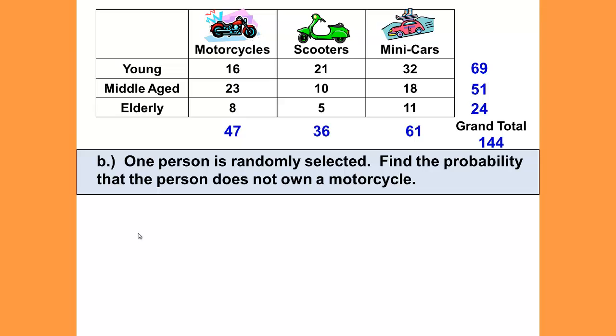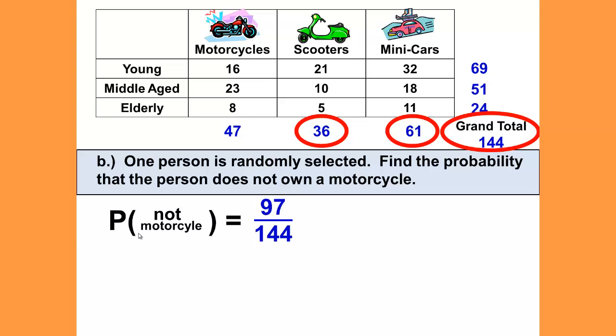Question B: One person is randomly selected. Find the probability that the person does not own a motorcycle. Probability of not a motorcycle. Well, there are 36 scooters plus 61 mini-cars, so that would be 97 out of the 144, so 97 divided by 144 gives us 0.6736.